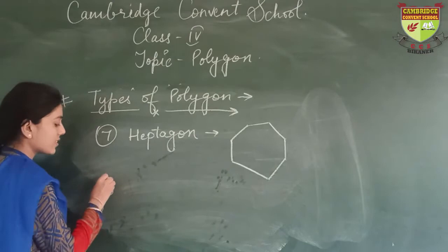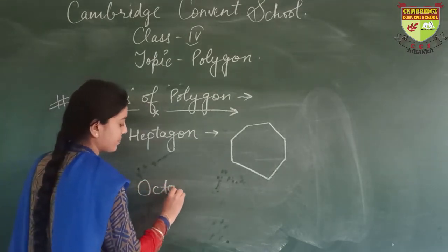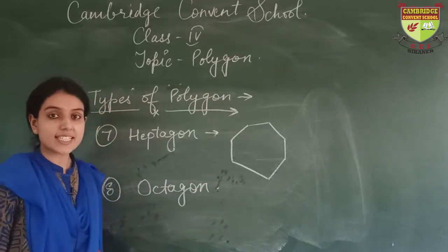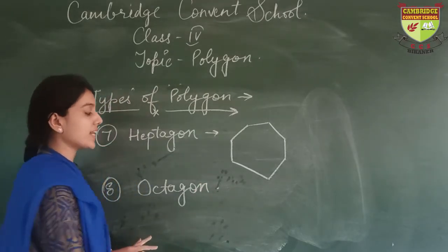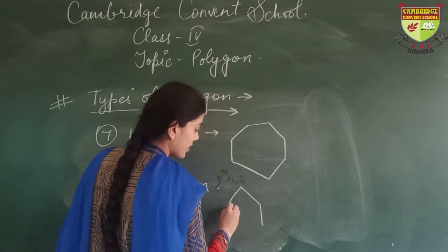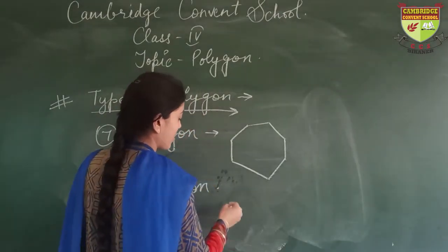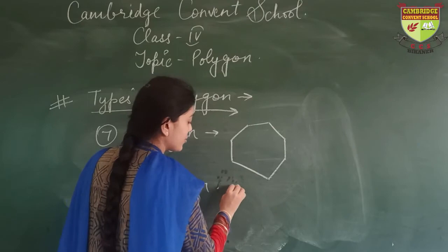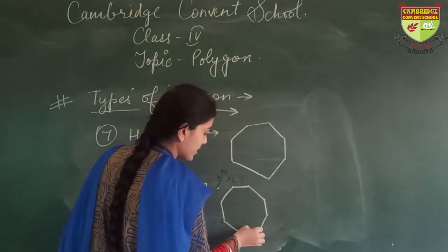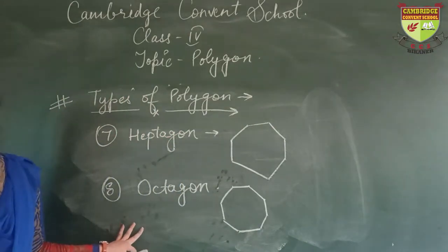And the last one is octagon. Any figure which has 8 sides is known as an octagon. Here the sides are 1, 2, 3, 4, 5, 6, 7, and 8. So this figure is known as octagon.